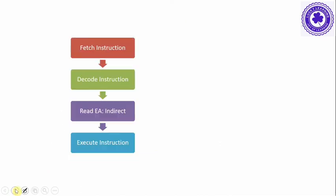These are the four phases: fetch an instruction, decode the instruction, read the effective address, and execute the instruction. Once these four phases are completed, it continues with the next instruction using the same four phases.